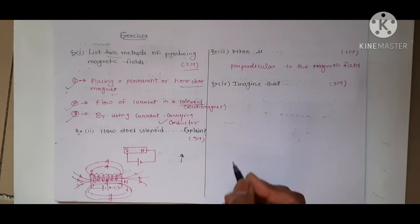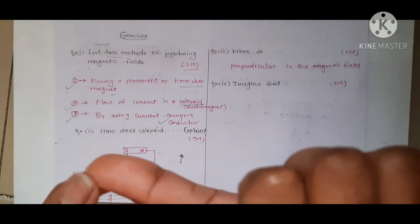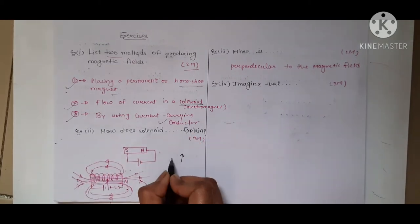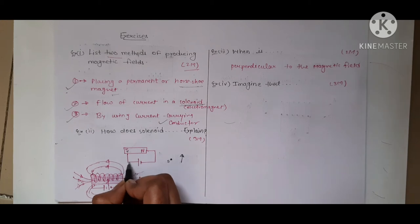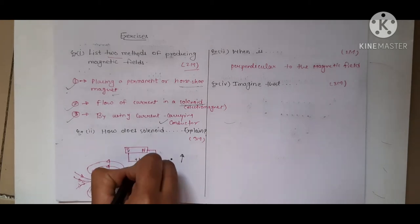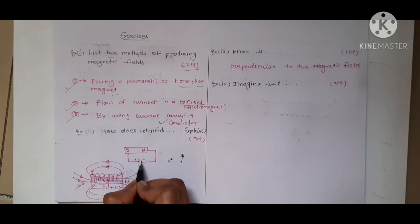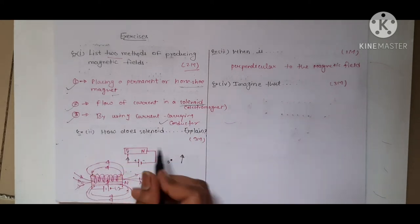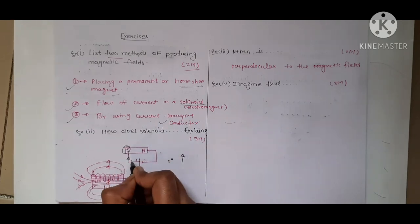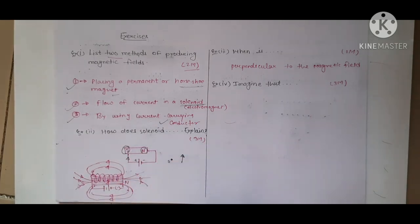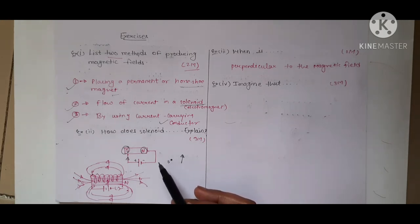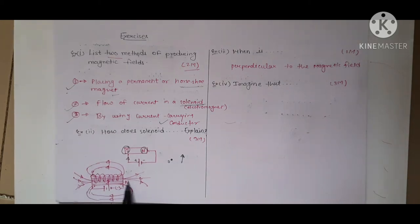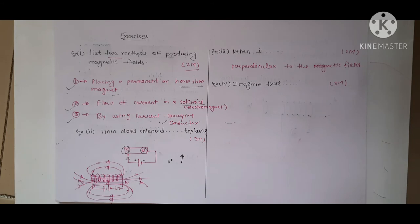Your fingers show the direction of current. If the current flows in this direction, then the thumb will always point towards the south pole. So that end will be the south pole. In the battery, current always starts from the positive terminal and ends at the negative terminal. So with the current direction going this way, that side is called the south pole and the other will be the north pole. In this way you can show the direction of current and magnetic field in a solenoid.